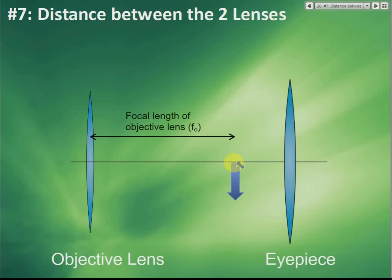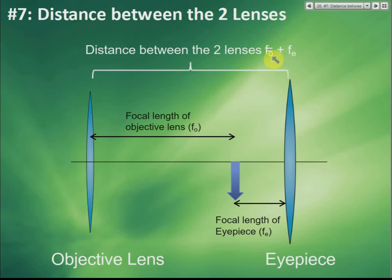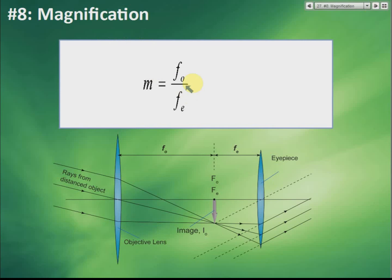Regarding the distance between the two lenses: the image of the objective lens forms at its principal focus, so that distance is fo (focal length of the objective lens). That same point is the principal focus of the eyepiece, so the distance to the eyepiece is fe. Therefore, the distance between the two lenses equals fo + fe. This is a common exam calculation.